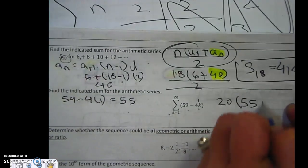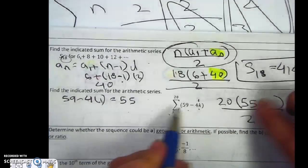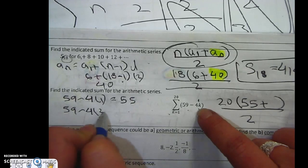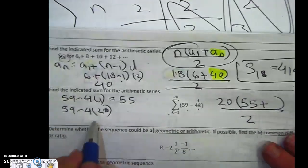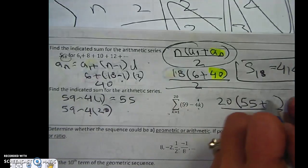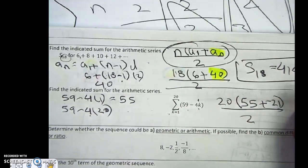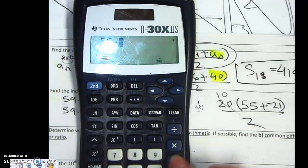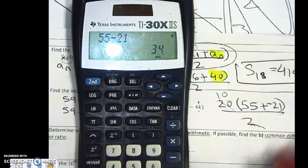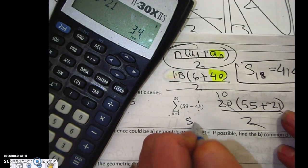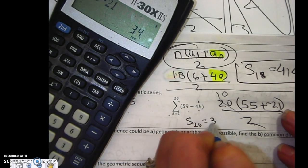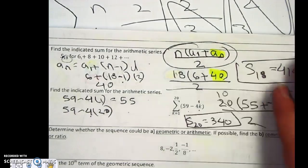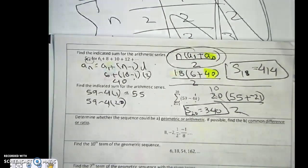I can figure out my 20th term by going 59 minus 4 times 20. And that's 80. 59 minus 80 is negative 21. And now I'm going to do the same thing. That's 10, and then 55 minus 21 times 10. So 340. The sum of the first 20 numbers is 340. Notice I'm asking for the same thing but presented in a different way.